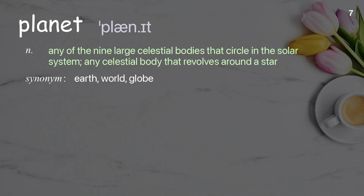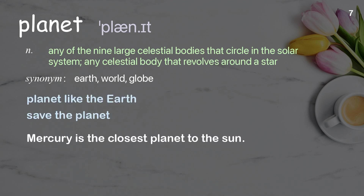Planet — any of the nine large celestial bodies that circle in the solar system; any celestial body that revolves around a star. Examples: planet like the earth, save the planet. Mercury is the closest planet to the sun.